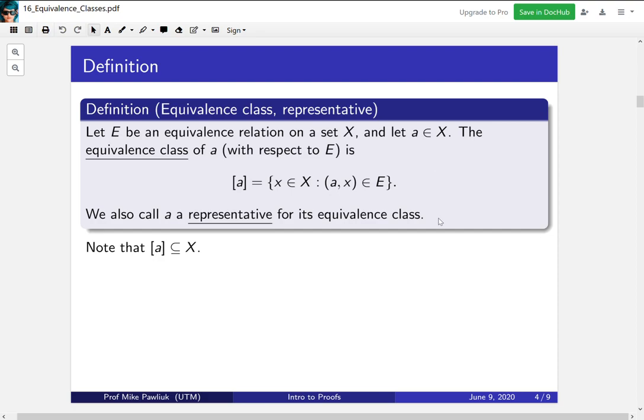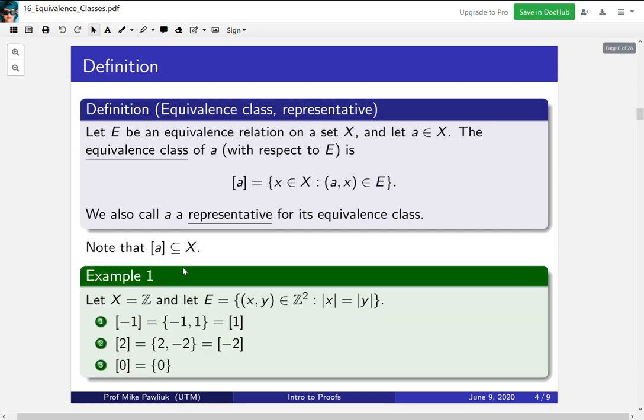Before we actually compute some of these things, it's helpful to think about what is the type of this object. This is something that often confuses people. Whatever this actually represents, it's a collection of all x with some property. So since it's a collection of all x with some property, it has to be a subset of X. That's why the equivalence class is always a subset of X.